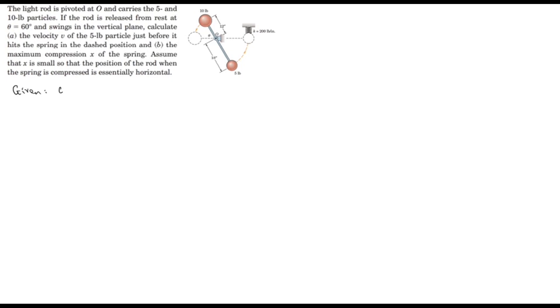Starting from the given part: theta is given as 60 degrees, and other values are given on the diagram. The required parameters are: first, the velocity of particle 2 just before it strikes the spring, and second, the maximum compression length x of the spring. Those are the two unknown parameters to evaluate.